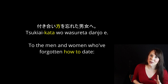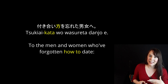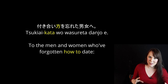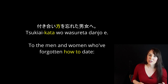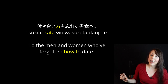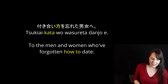Here's a title of a blog or opinion piece: '付き合い方を忘れた男女へ.' Tsukiaikata — the way to date, how to date. Wo wasureta — forgot. So: forgot how to date. This whole thought describes danjo — men and women. So: to the men and women who've forgotten how to date.